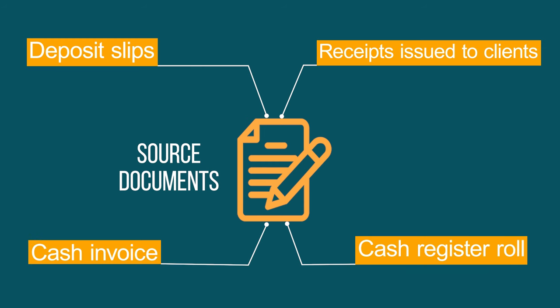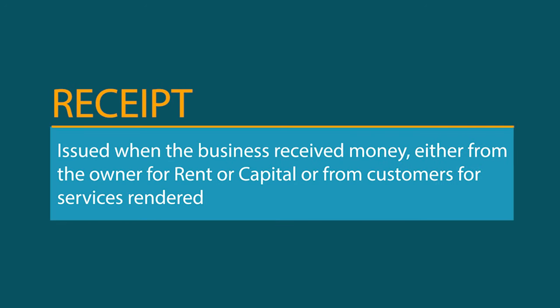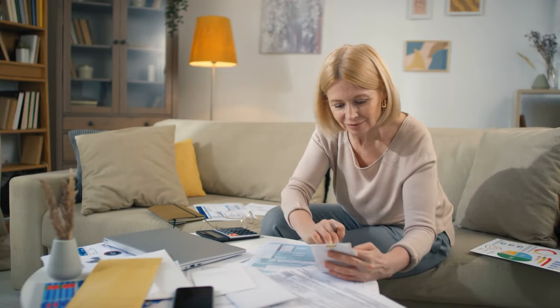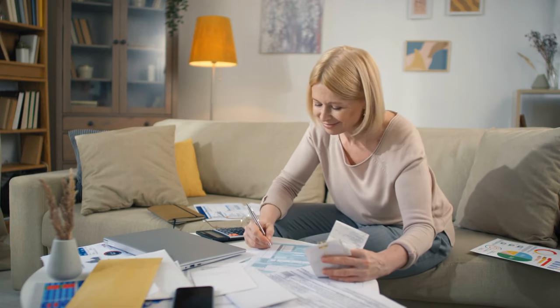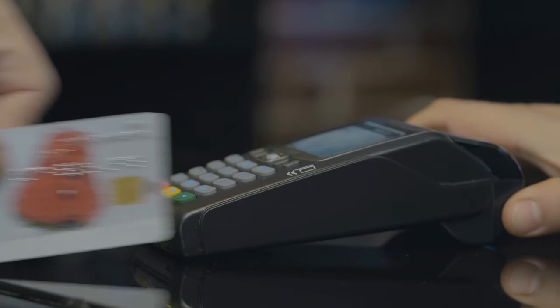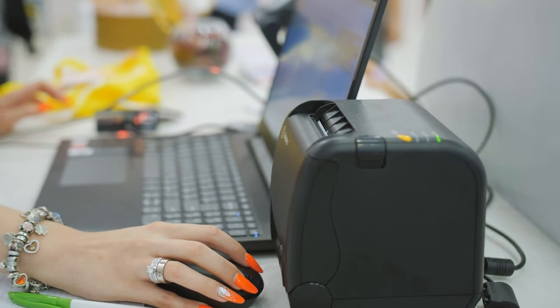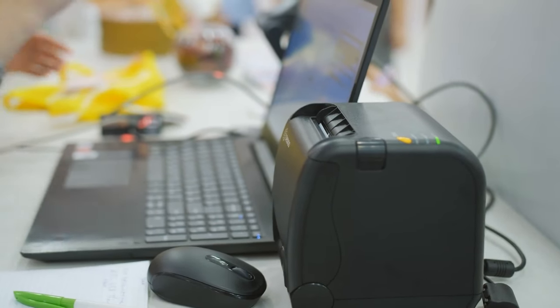Let's quickly recap the source documents. Receipts are issued when the business has received money — either from the owner for rent or capital, or from customers for services rendered. The business keeps a copy or duplicate and gives the original to the payee. Next up is the cash register roll. If receipt books are not used, the cash register issues receipts for all payments for services rendered. The client receives the original slip, and a copy stays in the machine to indicate the total sales at the end of the day.